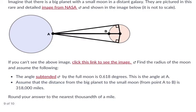So we're told that the angle subtended by the full moon is 0.618 degrees. It's a small angle. Where is that angle? Well, it's the angle right here. And as I say that, this is angle at A. Assume the distance from the big planet to the small moon, from point A to B, is 318,000 miles. Okay, so we're given this distance right here. That's 318,000 miles. And we're trying to find the radius.